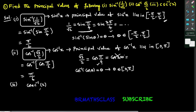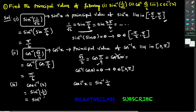We need to find the principal value of cosecant inverse of 2. There is a simple procedure to do this. We know this formula from the properties of inverse trigonometric functions: cosecant inverse x equals sin inverse of 1 by x. So cosecant inverse of 2 can be written as sin inverse of 1 by 2. This 1 by 2 you can write as sin 30 degrees, which means sin pi by 6. The value of sin pi by 6 is 1 by 2.